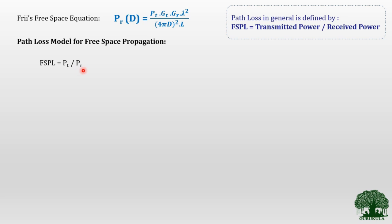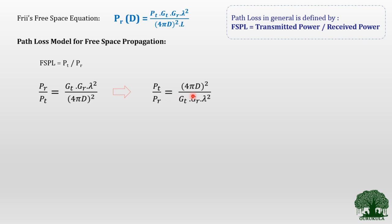I can write PT/PR from the Friis free space equation. I already have PR — if I pull out PT from the right-hand side, I get PR/PT = GT × GR × lambda² / (4πD)². But free space path loss is the ratio PT/PR, so if I reciprocate this, I get PT/PR = (4πD)² / (GT × GR × lambda²). This is the free space path loss equation.